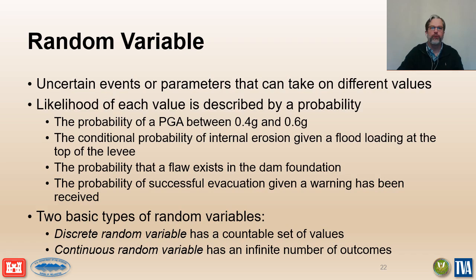Random variables are used in a risk analysis to model uncertain events and parameters. The likelihood of a particular event, a parameter value, or a range of parameter values is quantified by a probability estimate. There are two types of random variables found in risk analysis. A discrete random variable has a countable set of values such as the number of spillway gates, intervention being either successful or unsuccessful, or the levy either breaching or not breaching. A continuous random variable has an infinite set of possible values such as the annual maximum spillway flow or a system response probability for a failure mode.